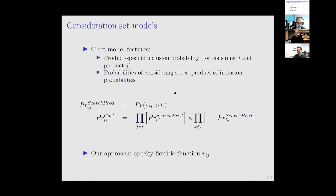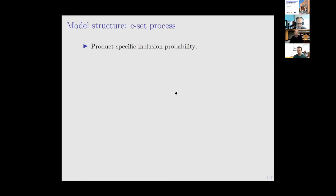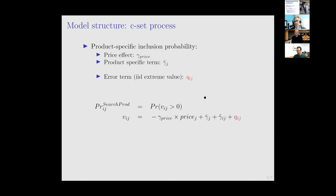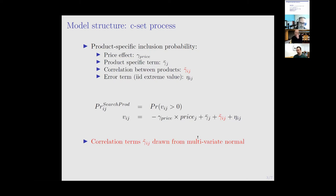The main contribution is specifying the function vij that drives the consideration process in a very flexible way. The product-specific inclusion probabilities are modeled as a function of price - when you change price, it makes it more likely someone searches the product, not just shifts purchases. There's also a product-specific term capturing saliency, an error term, and importantly a gamma-tilde term that allows for correlation in search probabilities across products. These gamma-tilde terms are drawn from a multivariate normal distribution where we estimate the covariance structure in a fully flexible way.